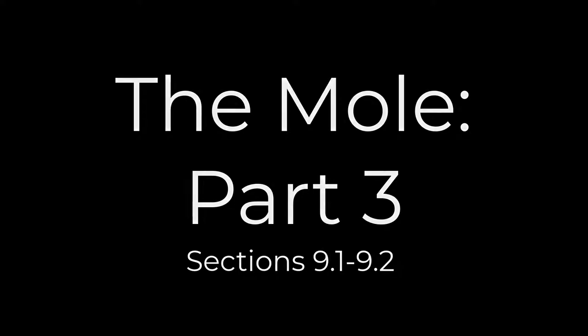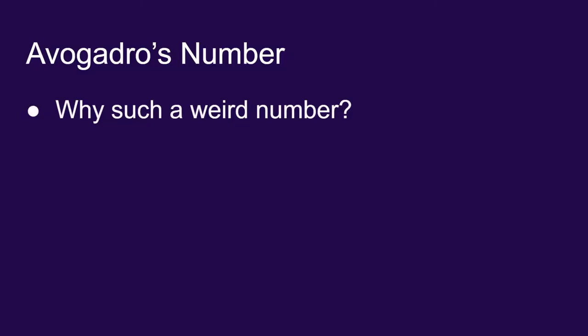Now that we've used Avogadro's number for a few problems, why is it such a weird number? Where does 6.022 times 10 to the 23 come from?